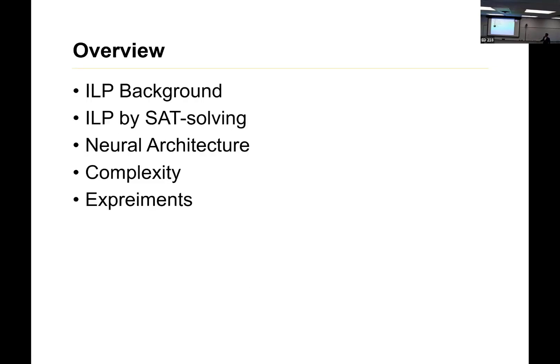Here's a brief overview of what we're going to talk about. I'll give a little bit of background on ILP, particularly as it relates to the paper we're discussing. Then I'll talk about ILP by solving the satisfaction problem, which is also the overall approach they take. I'll get into some details on the neural architecture. I'll talk about the shortcomings of this approach, which are primarily around complexity in terms of the number of weights you need in this neural architecture. Then I'll finish up with the experiments.